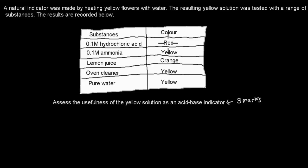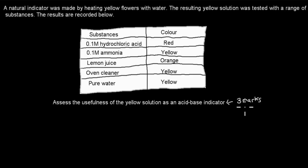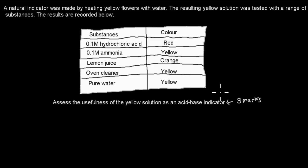The colors observed were: red, yellow, orange, yellow, yellow. Assess the usefulness of the yellow solution as an acid-base indicator — that's worth three marks. So pause the video now, attempt the question, and then press play once you've attempted it.